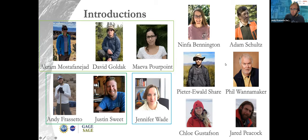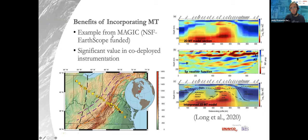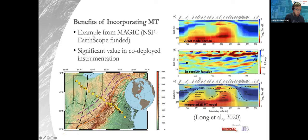Moving through the intro, one example of the compelling science benefit of combining MT and seismic observations: this is from an Earthscope-funded experiment, figures from a publication by Long et al. in 2020, showing a co-located transect of temporary broadband seismometer installations and long-period MT stations. When combined, you can narrow down potential interpretations, moving beyond stare-and-compare into mineral physics and joint inversions of coincident datasets — an exciting example of integrating new MT observations with an established pool of seismic capabilities.